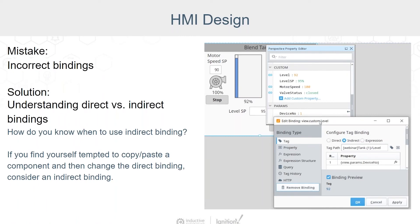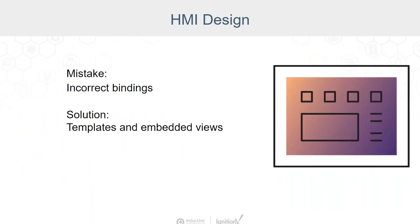For our last HMI design mistake, we're going to take a look at incorrect bindings. This ties back in with the previous topic of data collection and tag allocation. Recognizing when to use direct versus indirect bindings improves data collection efficiency and helps to create a more dynamic system. Whenever you find yourself tempted to copy-paste a component and then change your direct bindings, that's the time to consider an indirect binding. Back to the theme of reusability, understand when to use templates and embedded views — you've already put in the work of designing views and components, so why build them again?